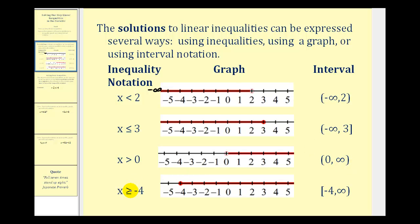For x is greater than or equal to negative four, closed point on negative four, and then shade to the right. Using interval notation, we have a square bracket on negative four, showing that it includes the endpoint, and then infinity.